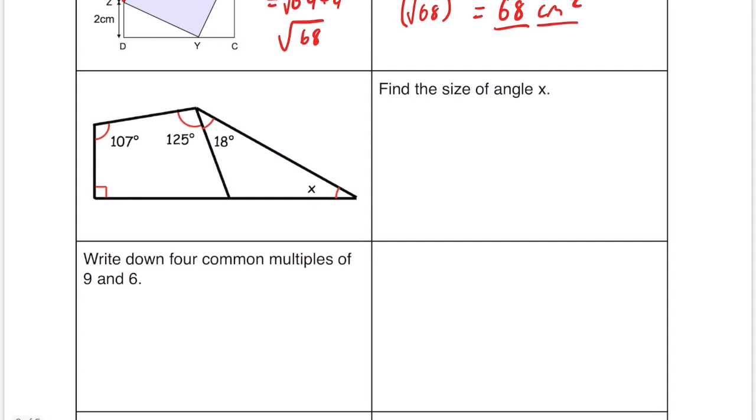Find the size of angle X. So if we know that there's three angles within this quadrilateral we can do 107 add 125 add 90 which gives us 322. 360 take away 322 is going to be 38. So that means that this one down here is 38. If we take that away from 180 we get 142. 142 add 18 is 160 and if we take that away from 180 X must be 20.